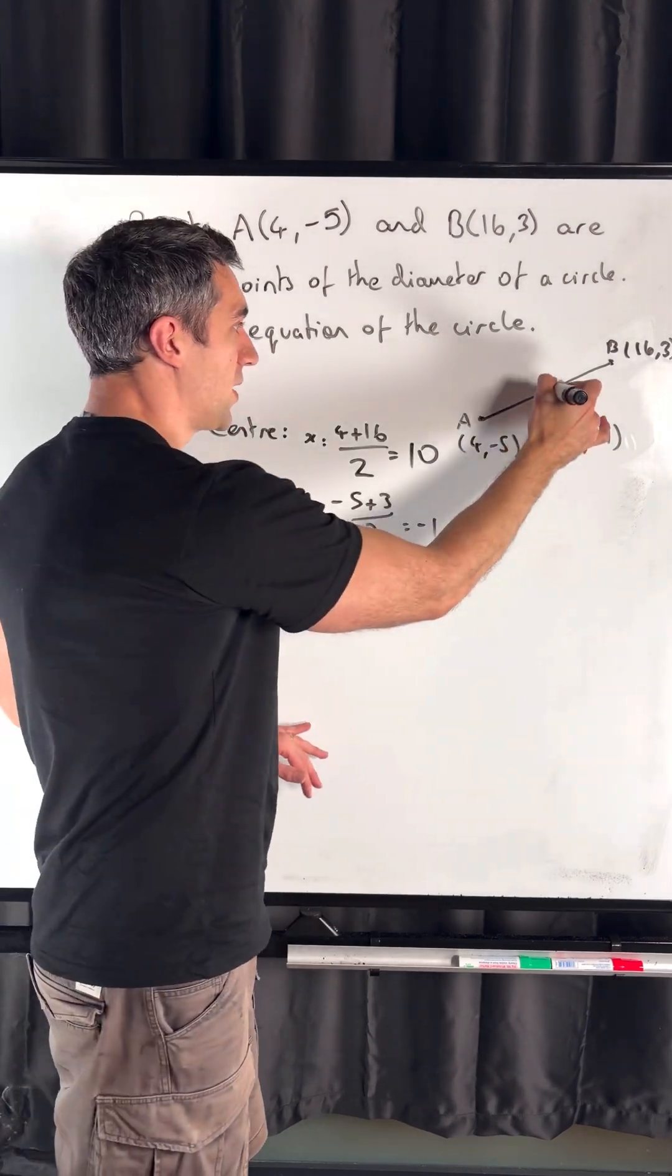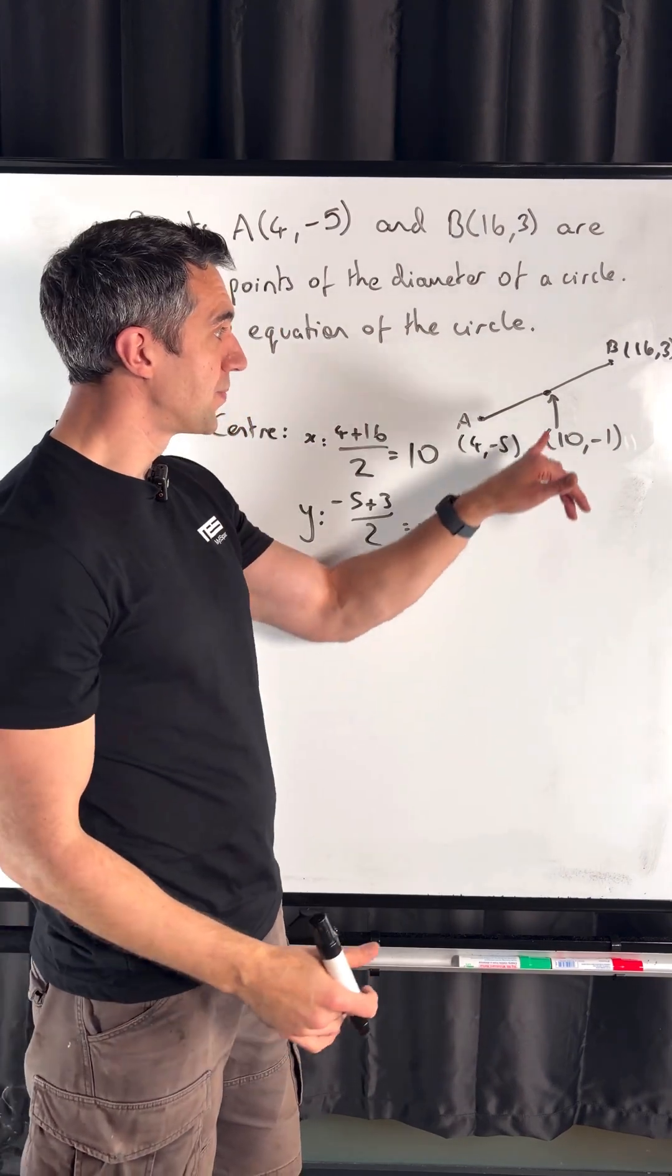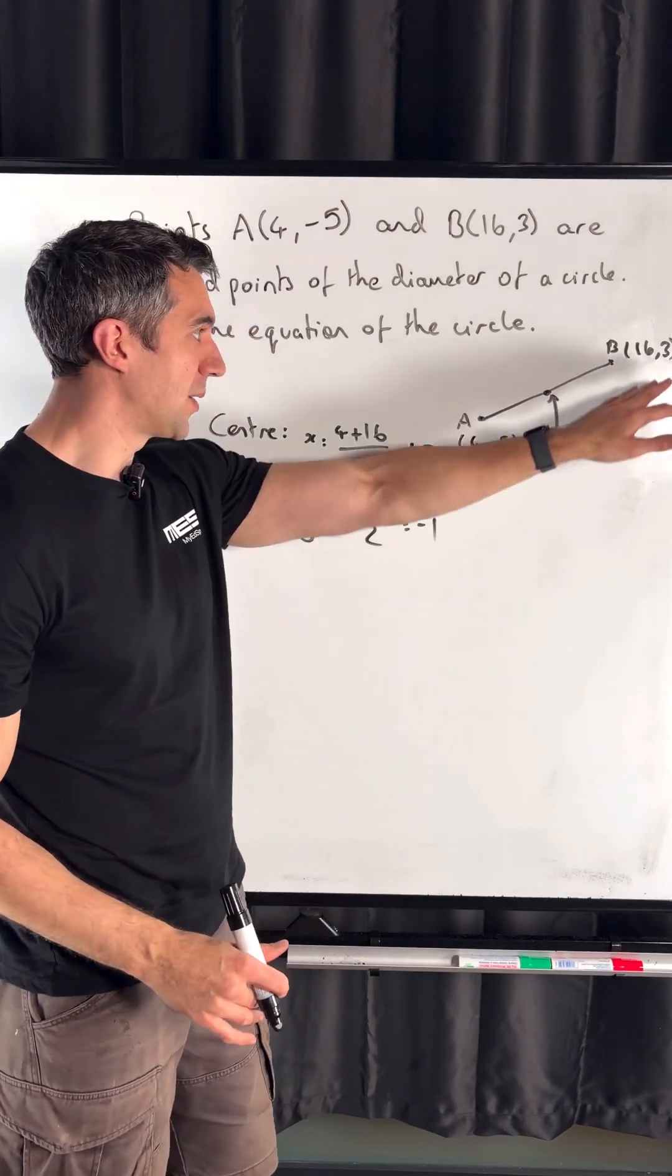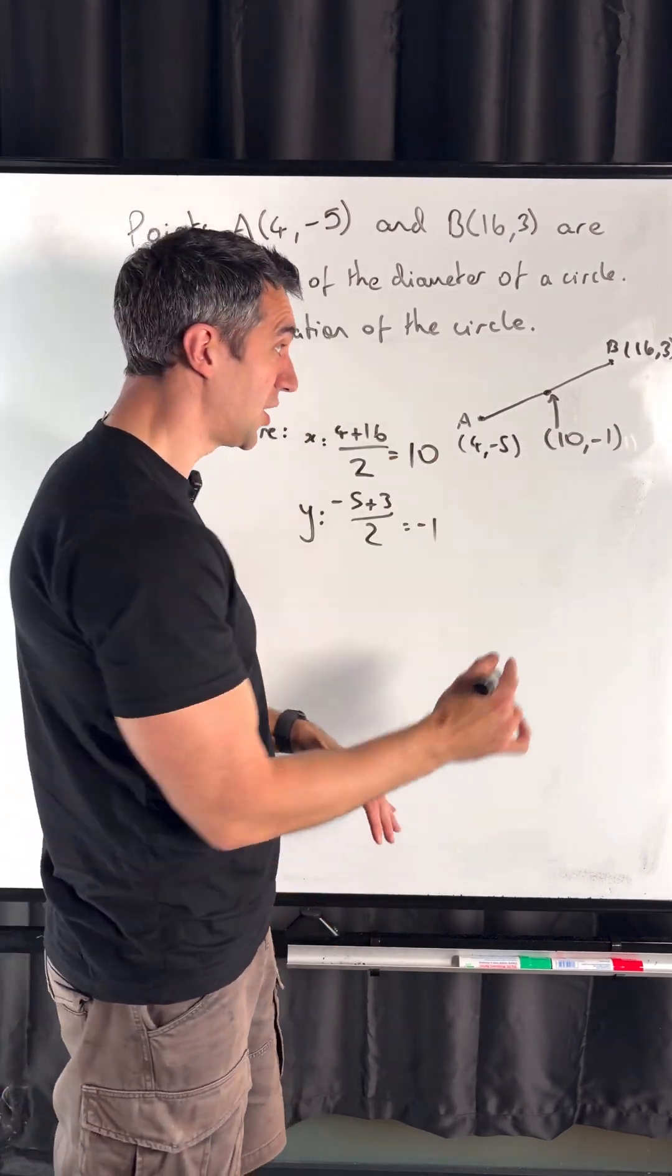Next, we need to find the distance between the center and either point A or B—the radius is the same. I'll use point B.